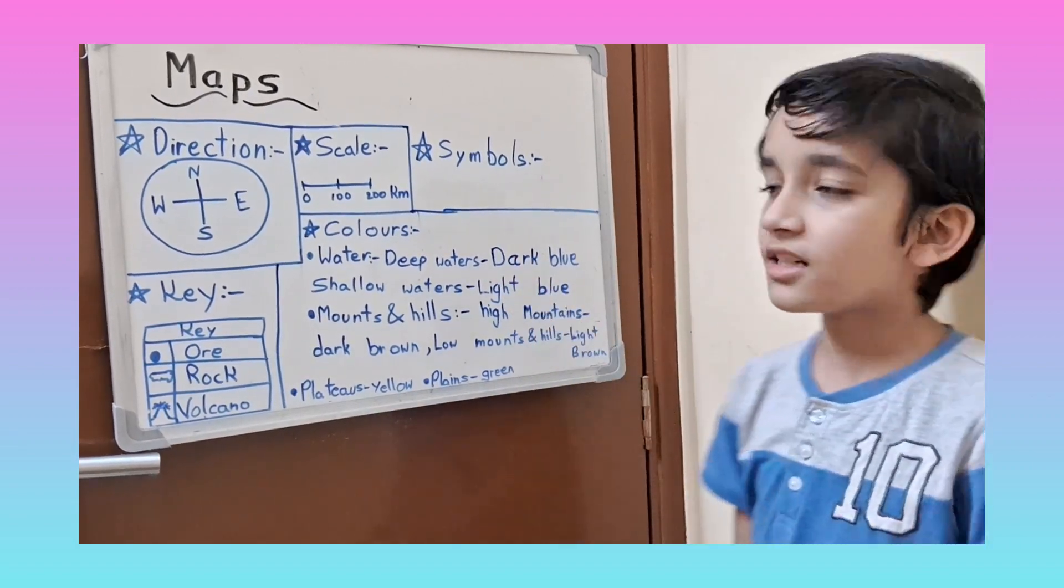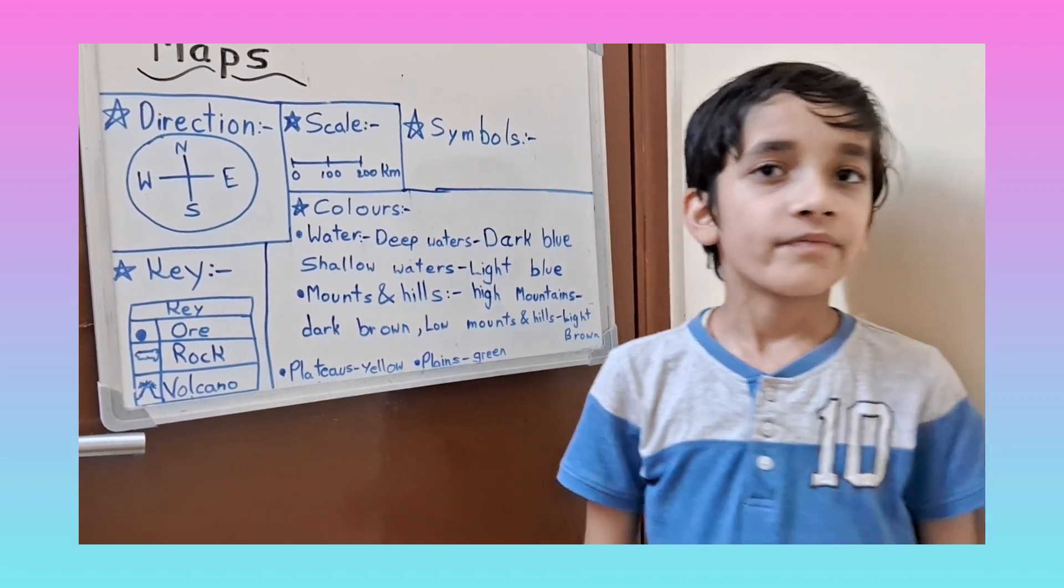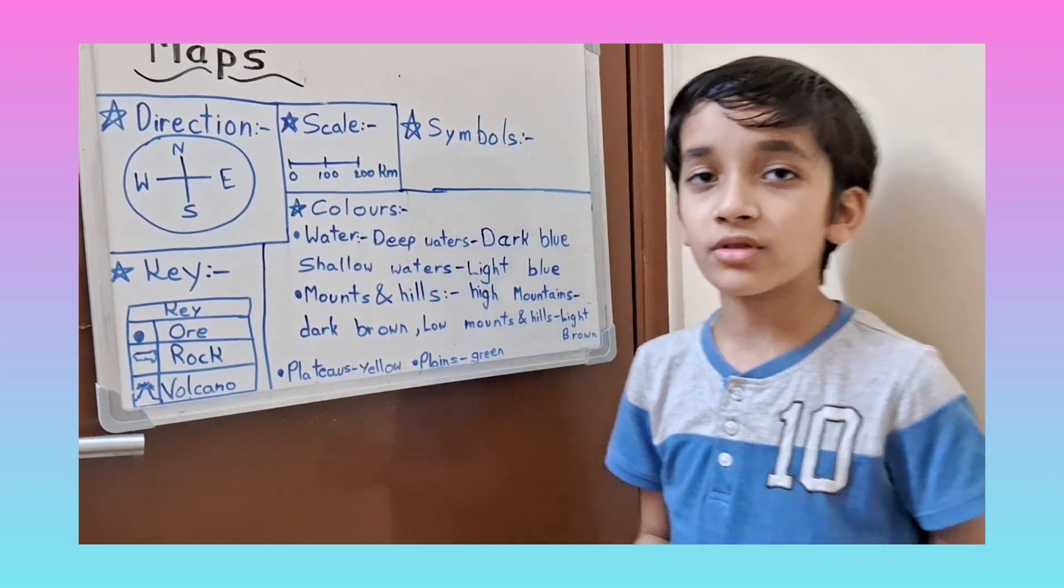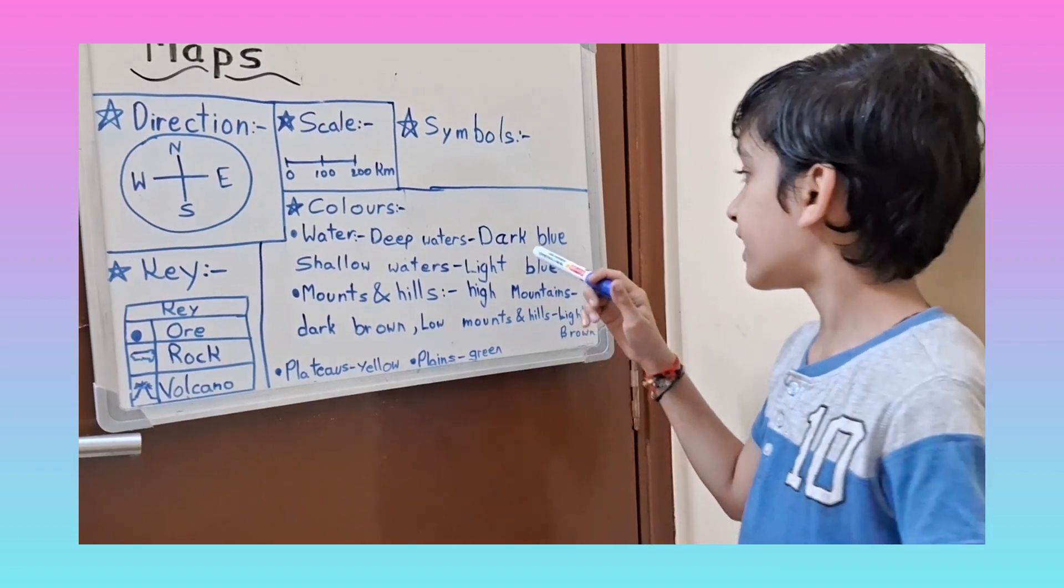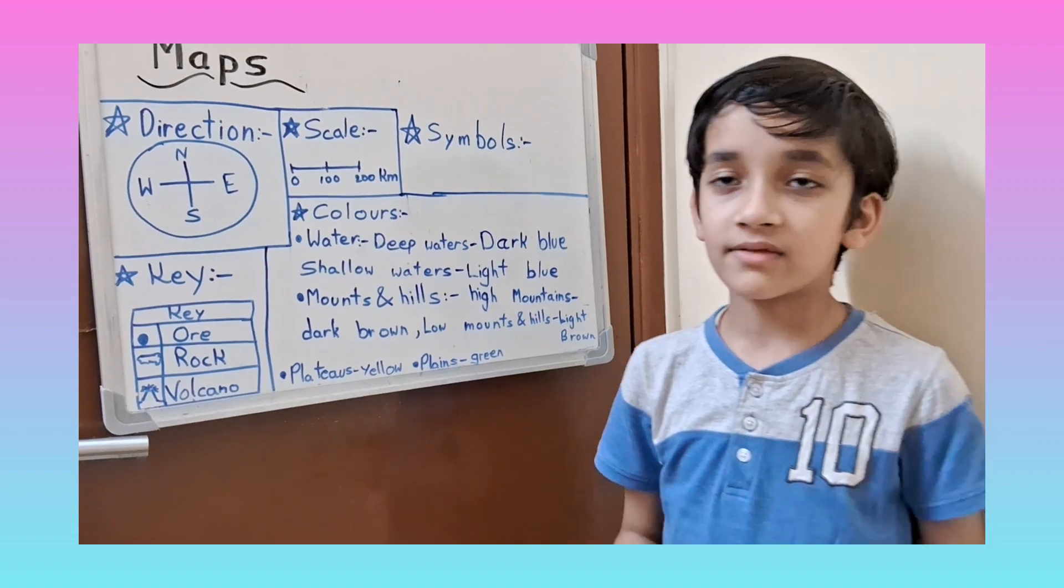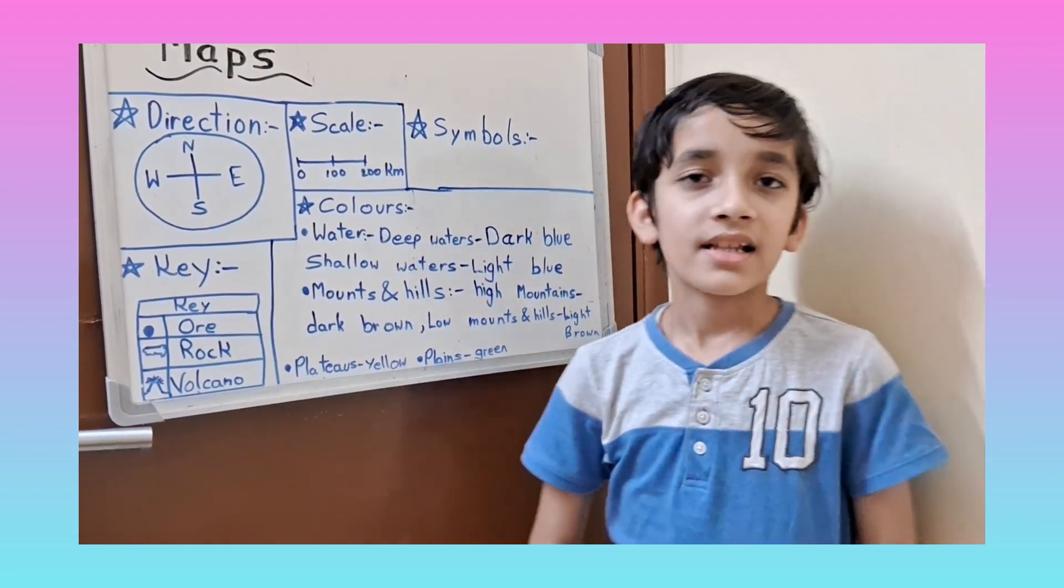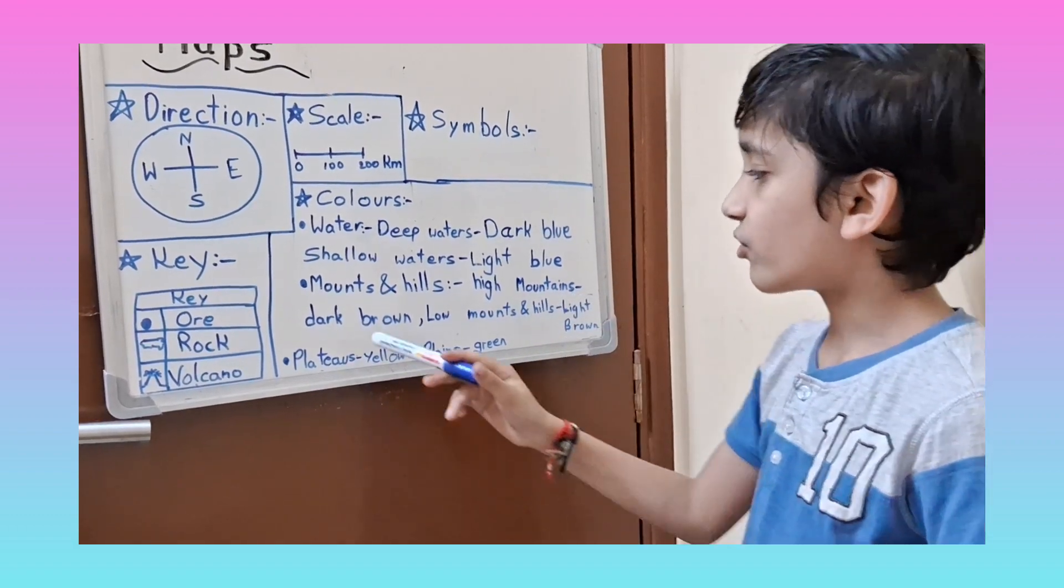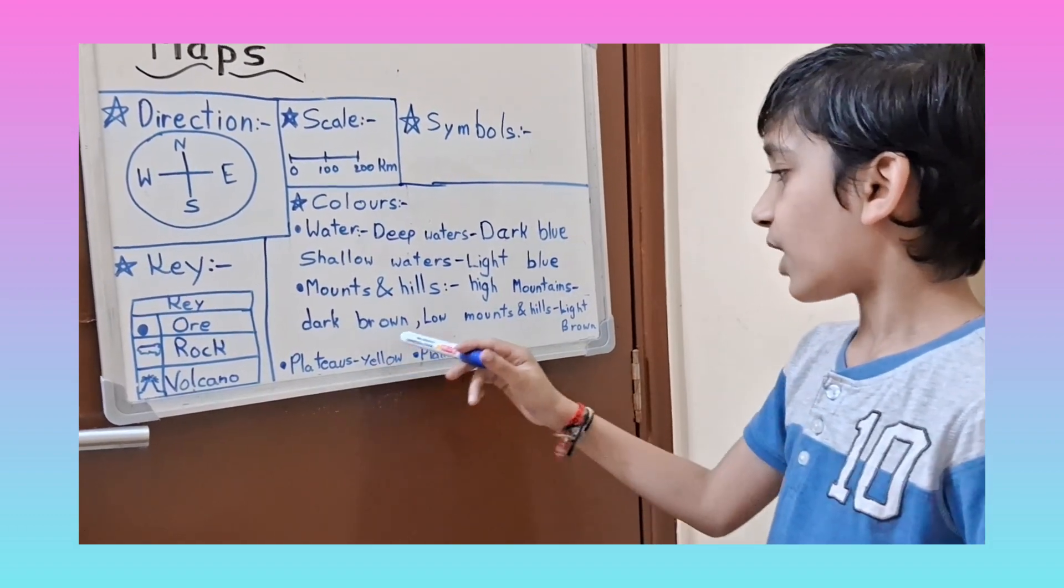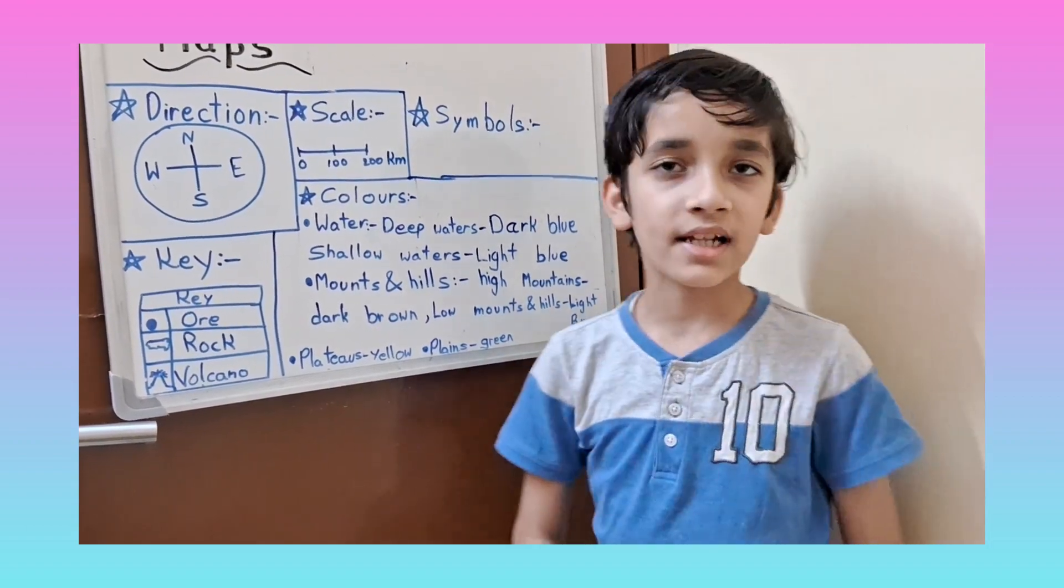Next are the colors. The deep water bodies are shown in dark blue. The shallow water bodies, which are not so deep, are shown in light blue. High mountains are shown in dark brown, and low mountains and hills are shown in light brown.